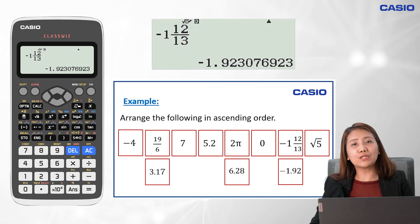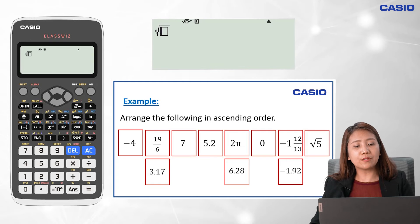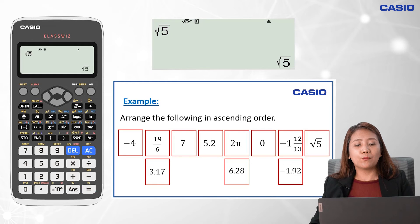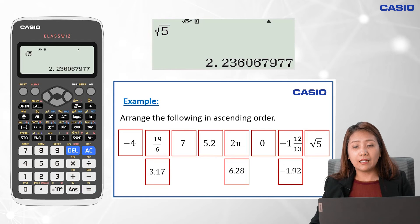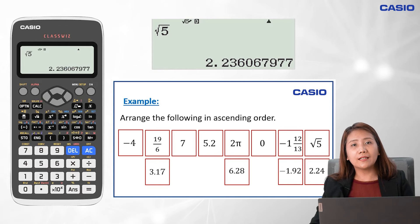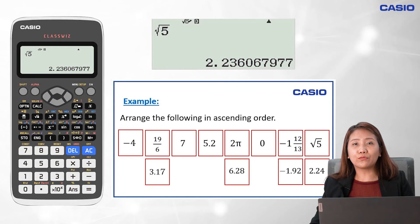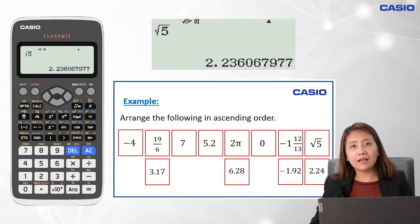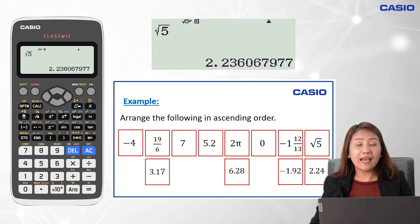Last, we need to convert the square root of 5 to decimal. We click on the square root symbol followed by 5, click on equal sign, then click on SD to change to decimal. The value is approximately 2.24. Having all values, arranging our answer we have: negative 4, negative 1 and 12 over 13, 0, square root of 5, 19 over 6, 5.2, 2π, and 7.